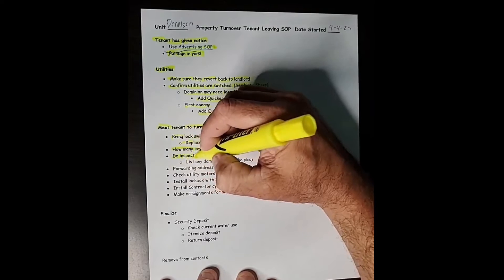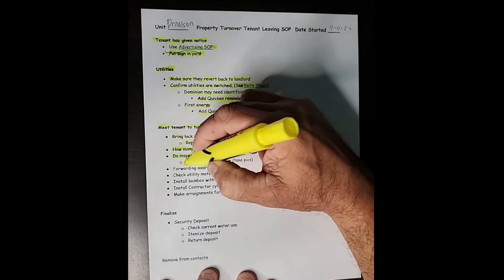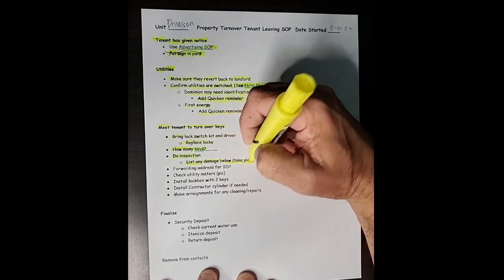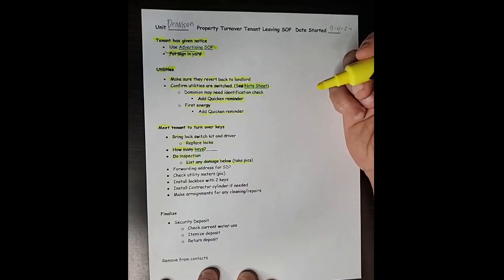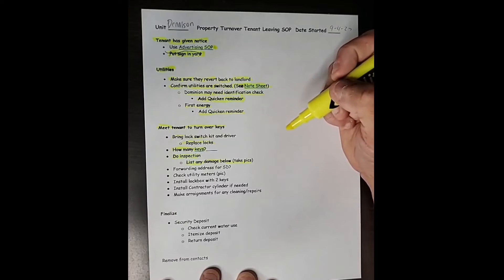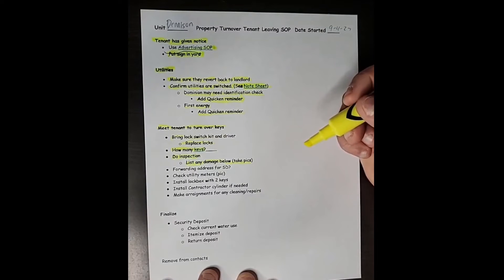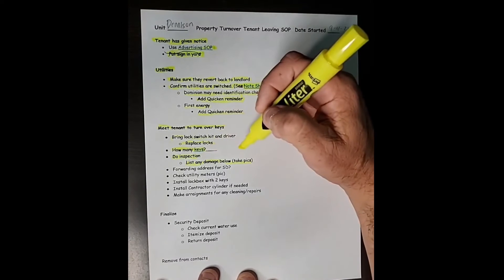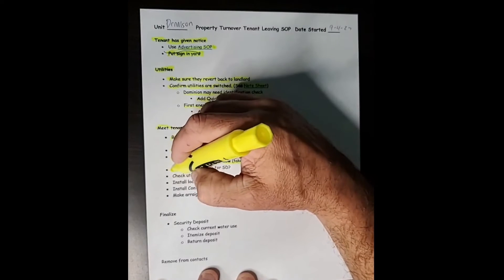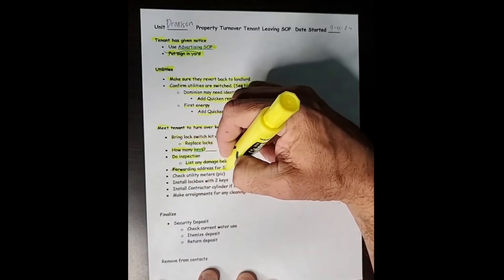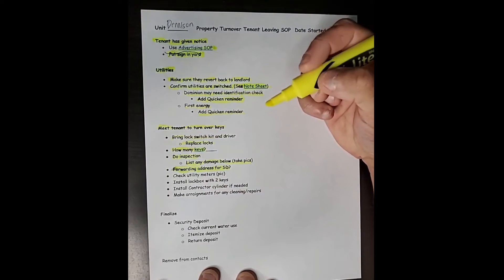And I do an inspection with the tenant there. That way I can make a sheet and list any damages and take pictures of damages. And these are basically like maybe large holes in the walls or damaged areas, things that weren't caused by normal wear and tear. And those things that you can tell the tenant did something carelessly, well, those things will be taken out of their security deposit. Before that tenant leaves, I'm going to need a forwarding address from them so I have a place to send the security deposit. I have 30 days to do that by Ohio law.